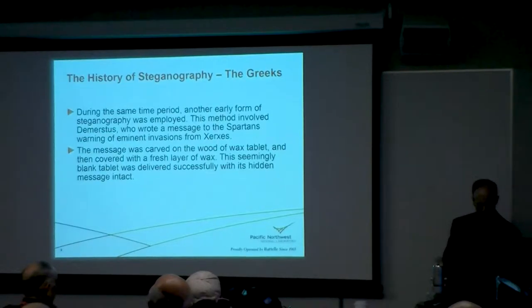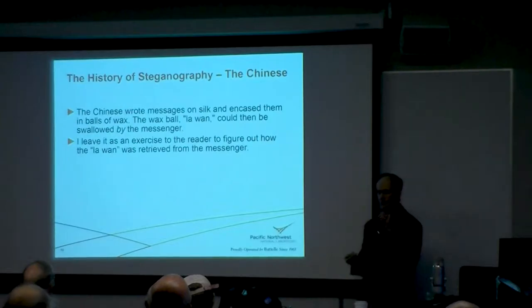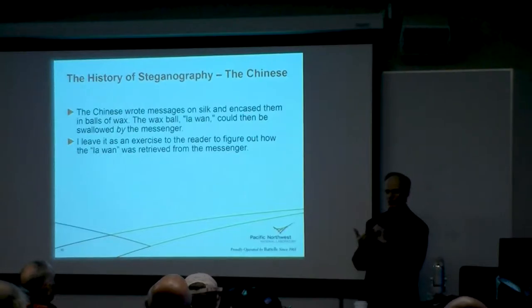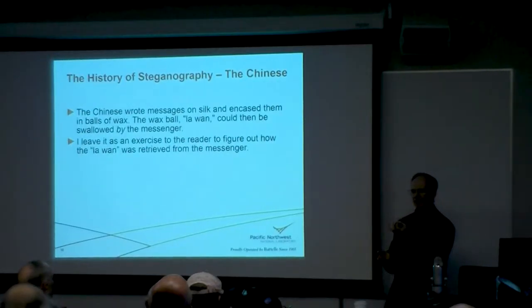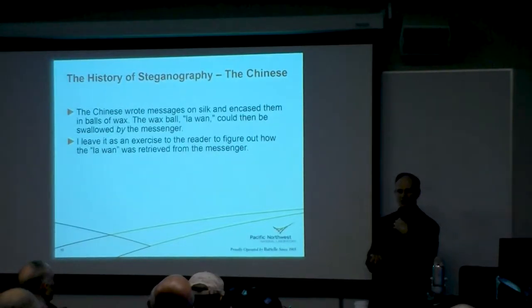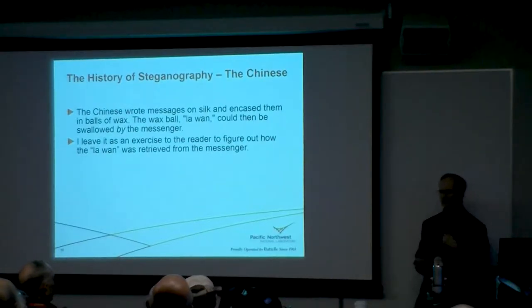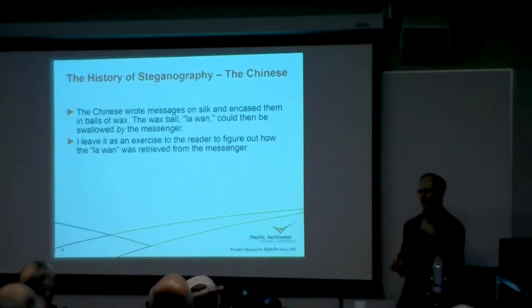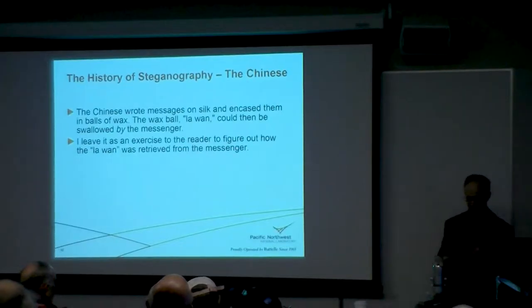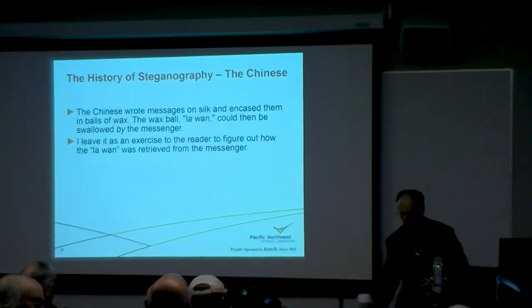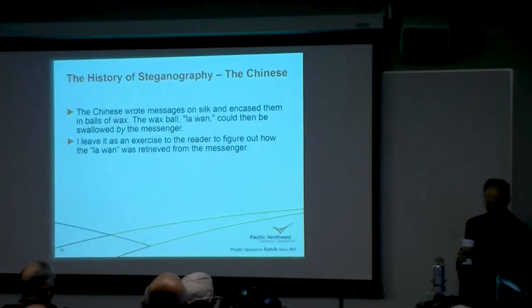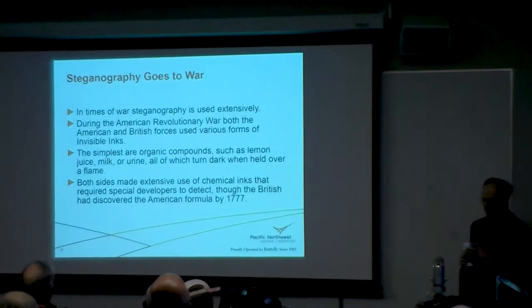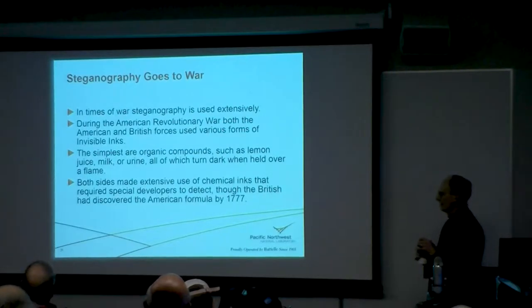The Chinese also had steganography. They had silk — they would write the message on silk, encase it in a ball of wax, and the slave would swallow the ball of wax. I leave it to your imagination as to how they retrieved it — there are at least two methods. Steganography is very popular in war and used extensively. In the American Revolution, the British and Americans used invisible ink made from lemon juice, milk, and urine — hold over a flame and they turn dark.